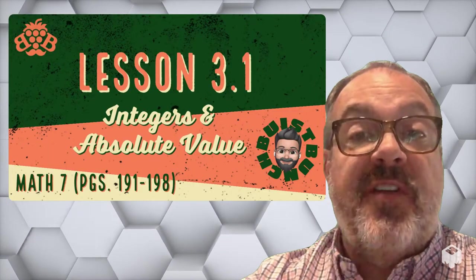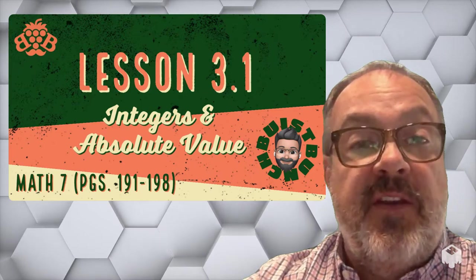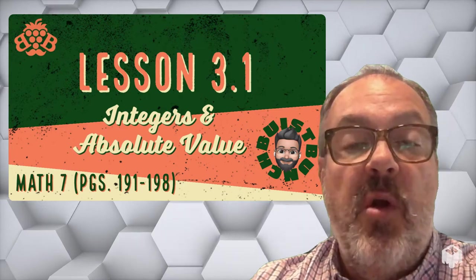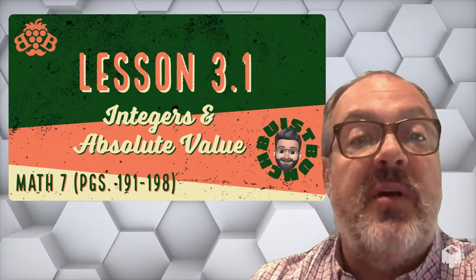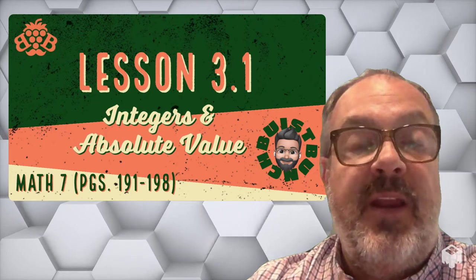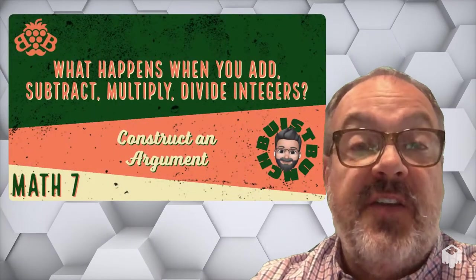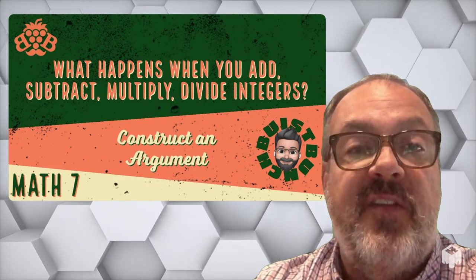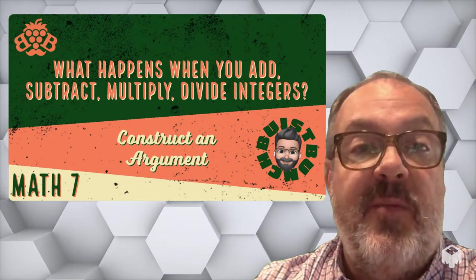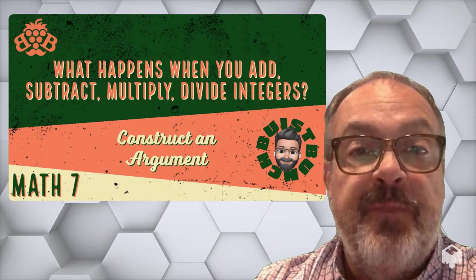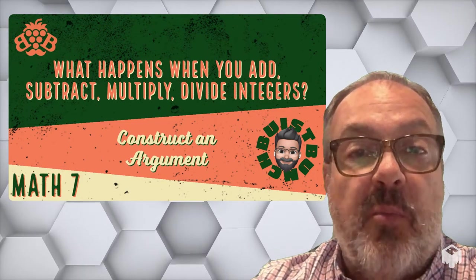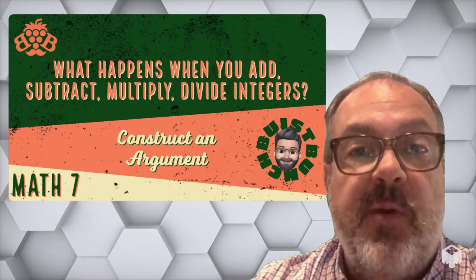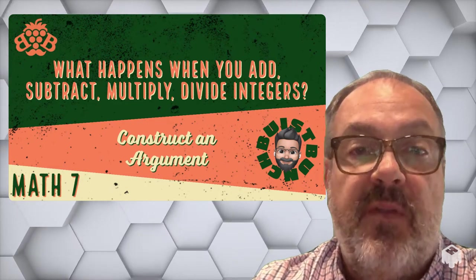All right, we're starting out chapter 3, integers, and in lesson 1, entitled Integers and Absolute Value, we're going to be working in our workbooks on pages 191 to 198. Just a reminder that our essential question for chapter 3 is: what happens when you add, subtract, multiply, divide integers? And our mathematical practice is going to be construct an argument. We will focus on those two things throughout this chapter.